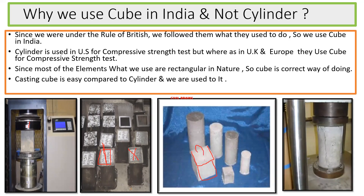When you do it on the cylinder, the US people point out that whichever way you unmold the cylinder, you only have two faces to place it — either this end or that end. But with the cube, you have six options: the top face, the bottom face, the left, the right, and the other two faces. So they say the cube is not the right way of determining strength, and they go with the cylinder.